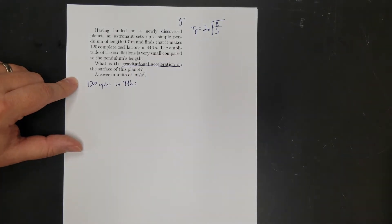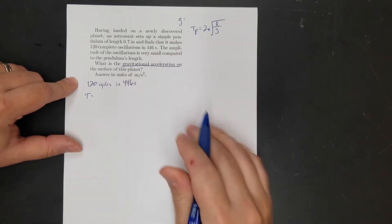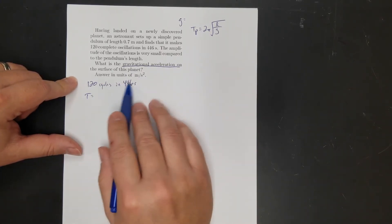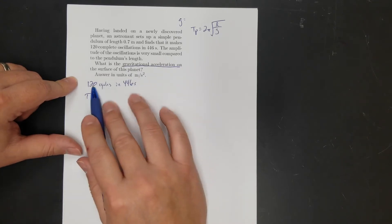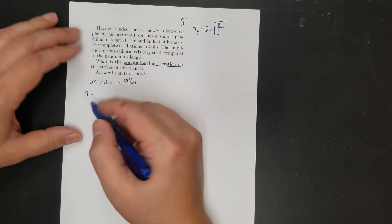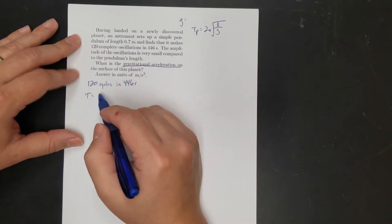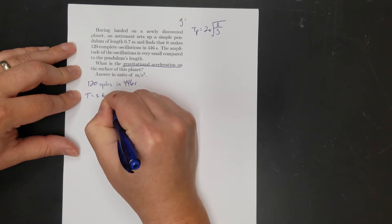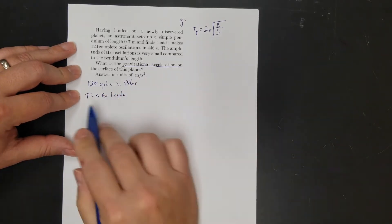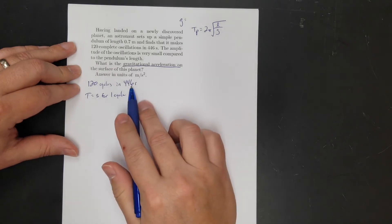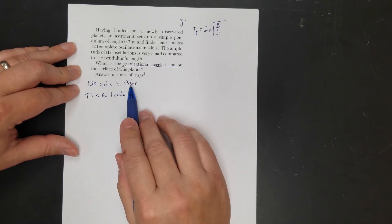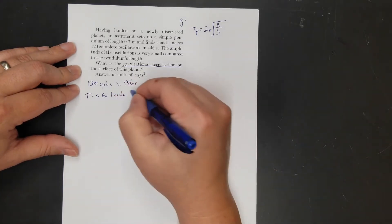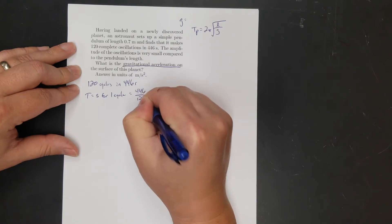So I'm going to need period. I'm going to have to do some algebra to solve for g. But before I can do that, I need the period of the pendulum. And it gives me 120 oscillations or cycles in 446 seconds. Okay, so if I'm going to figure out what the period is, you could just guess and check because basically you're going to be dividing. So I do 120 divided by 446 or do I do 446 divided by 120?